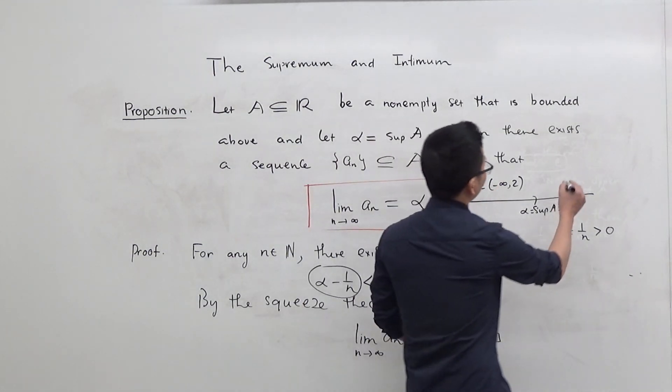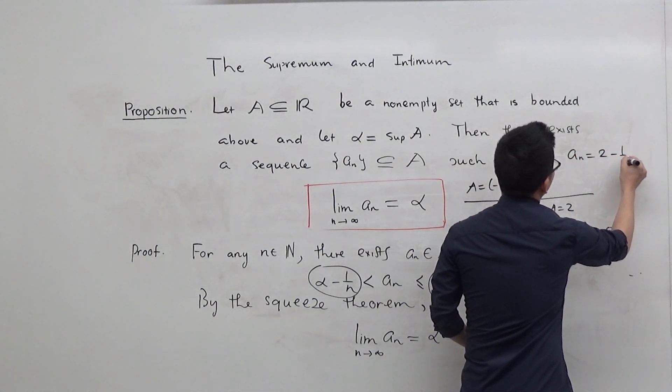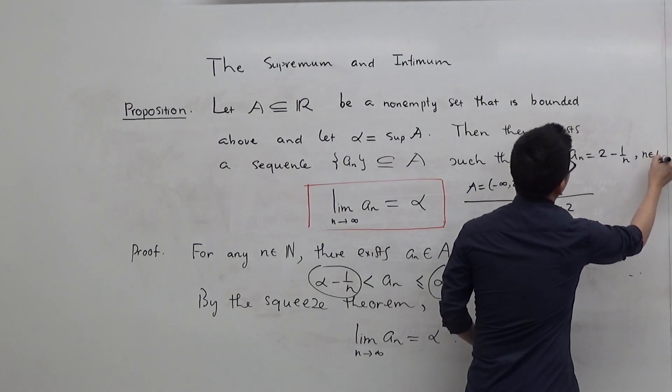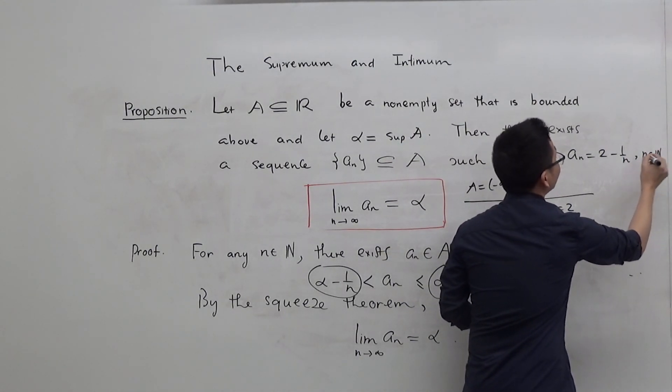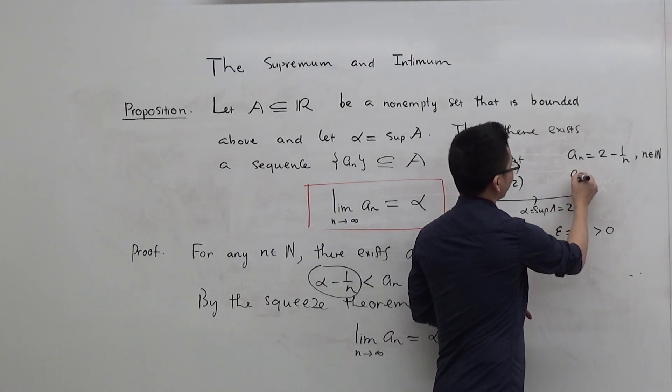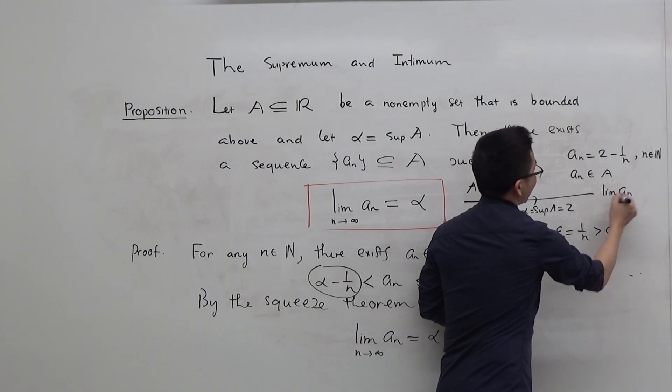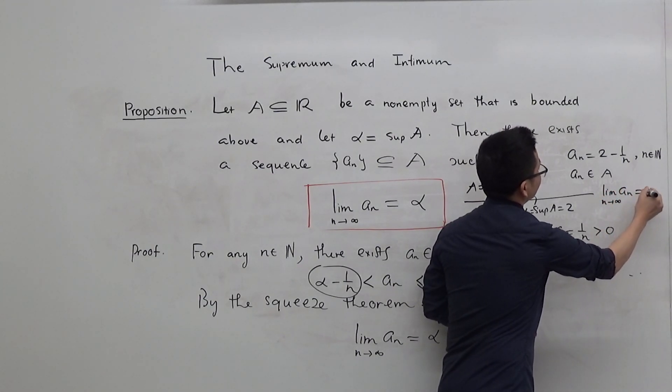For example, let A_n be 2 minus 1 over n for n in the set of all natural numbers. Then you can see that A_n is in A for every n and the limit of A_n as n approaches infinity is 2.